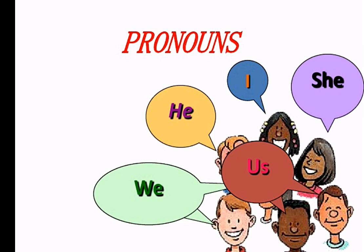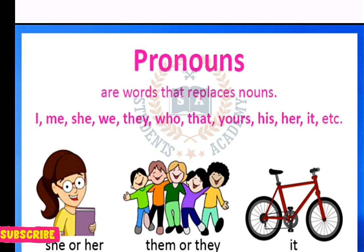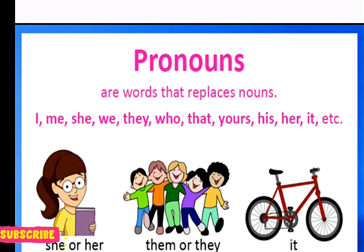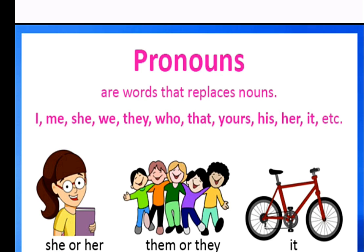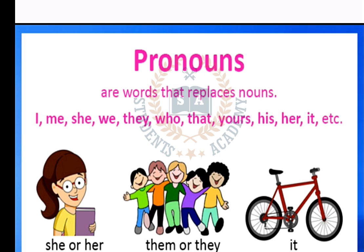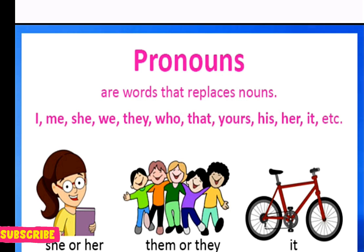Today the topic we are going to discuss is pronoun. Pronoun ہوتے کیا ہیں, first of all ہم اس کی definition دیکھ لیتے ہیں کہ pronoun کیا ہوتے ہیں۔ Pronouns are the words that replace nouns. یعنی کہ ہم کوئی بھی passage یا paragraph لکھ رہے ہیں، کسی بھی شخص کے اوپر تو اس کے noun کی repetition سے بچنے کے لیے ہم کوئی words use کرتے ہیں instead of that noun۔ وہ ہمارے پاس آ جاتا ہے pronoun۔ اس میں آتے ہیں: I, me, she, we, they, who, that, yours, his, her وغیرہ۔